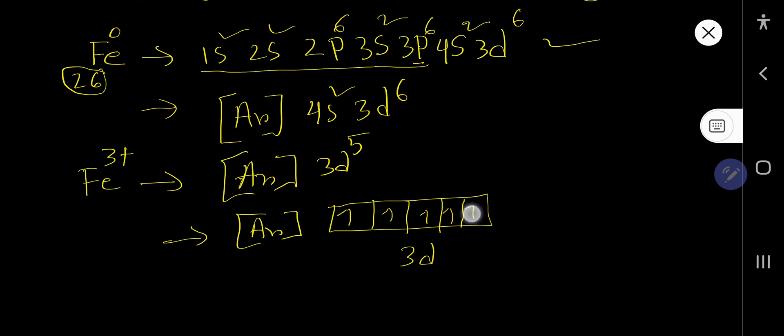One, two, three, four, five. So we have five unpaired electrons in Fe3+.